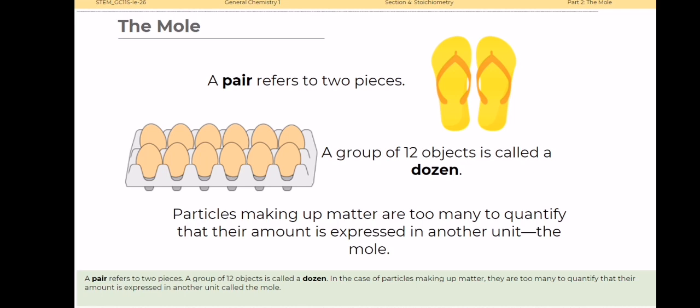Looking at the picture, we have a pair of slippers and a dozen of eggs. When we talk about a pair, it refers to two pieces, and a group of 12 objects is called a dozen.